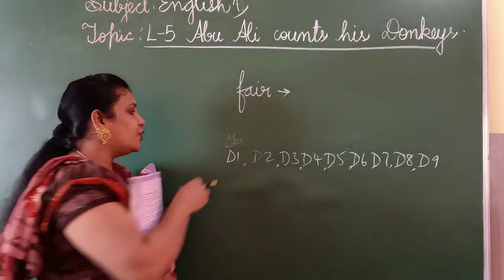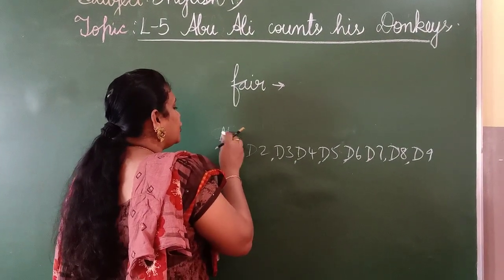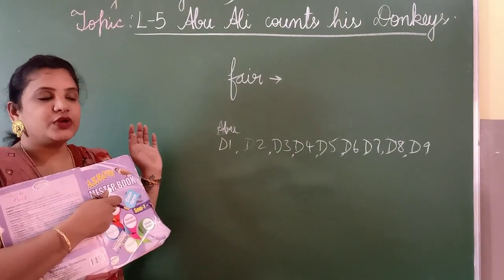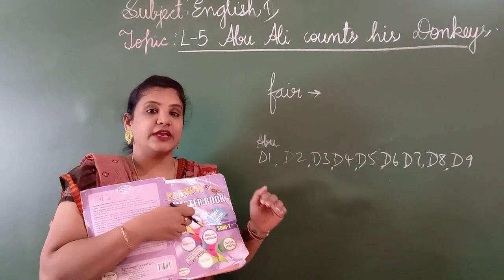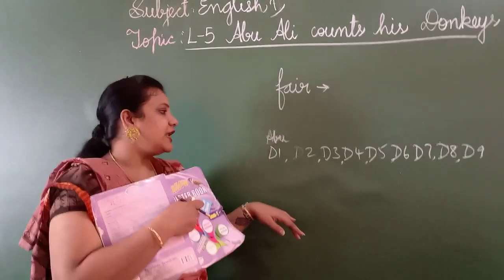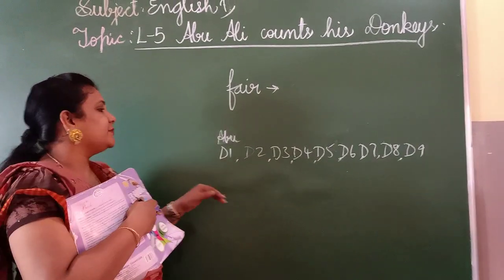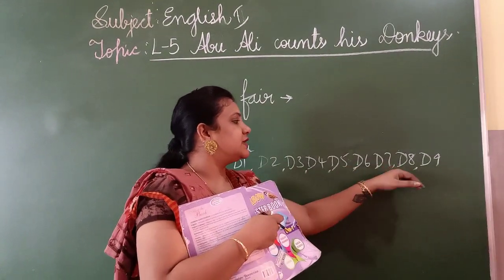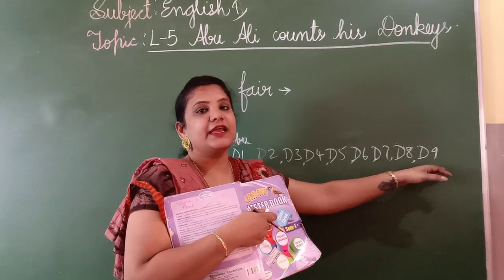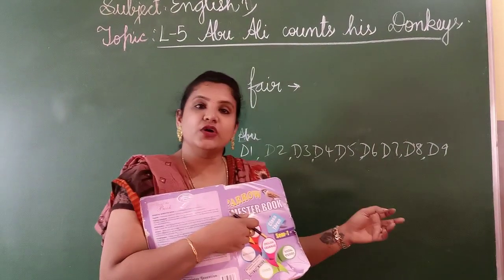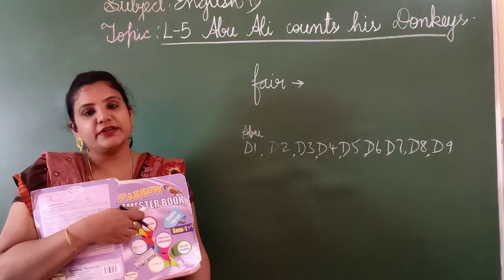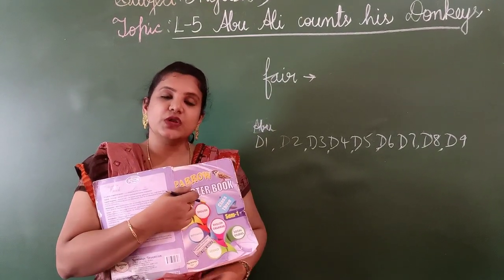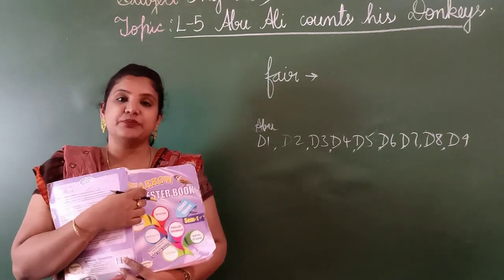Again, he sits on the donkey and starts his journey. After some time he thinks, okay, now I have to count my donkeys again. He turns back and counts: one, two, three, four, five, six, seven, eight. Again only eight donkeys! He is worried and very disappointed.